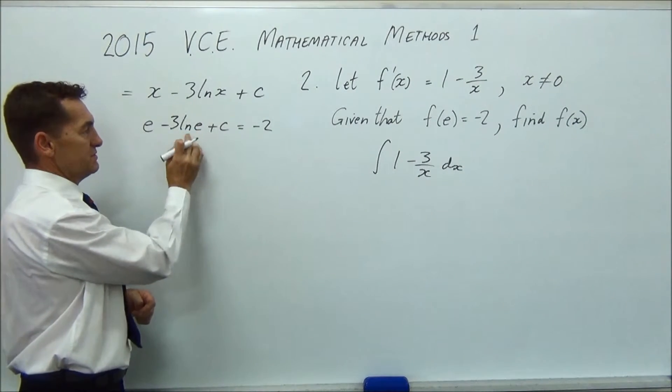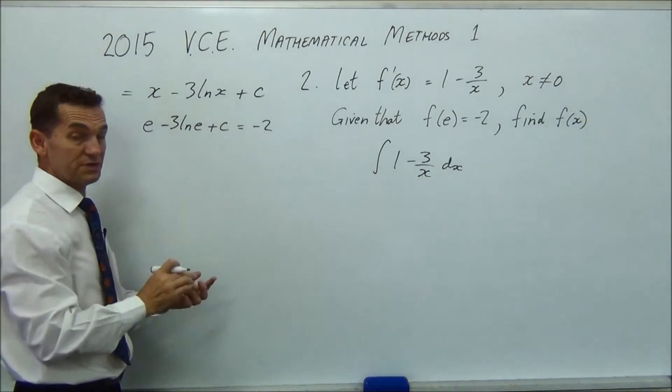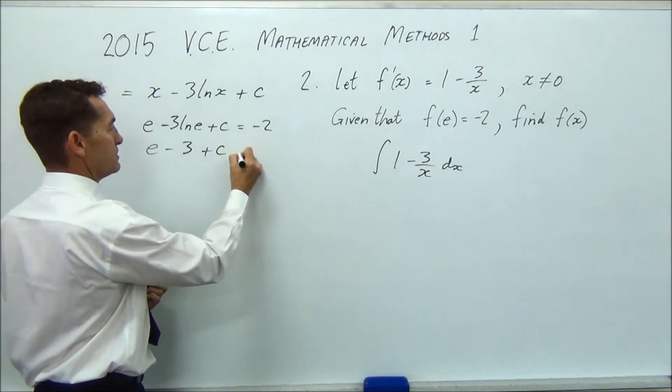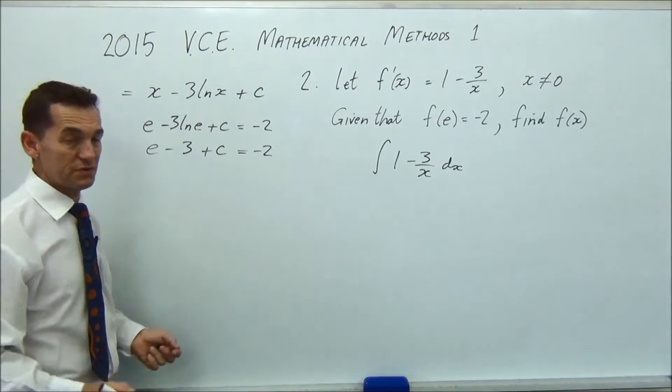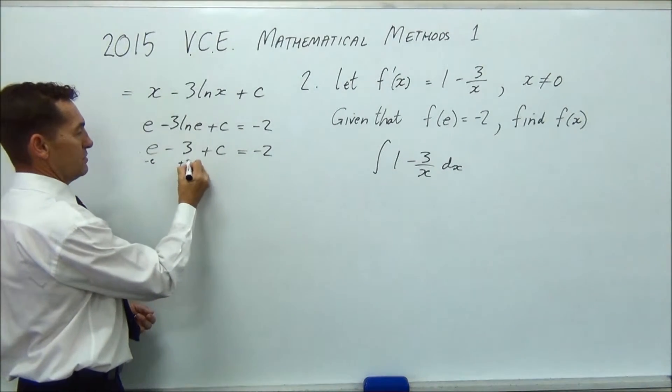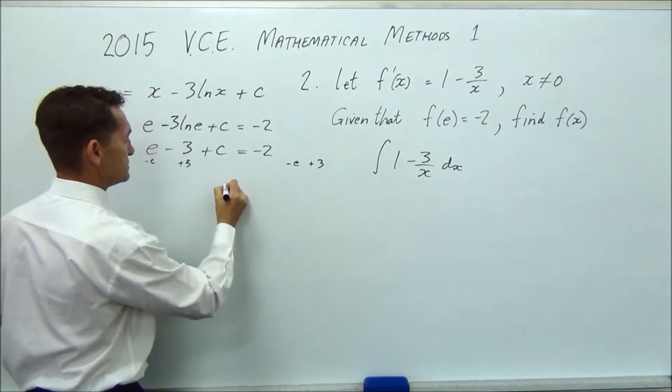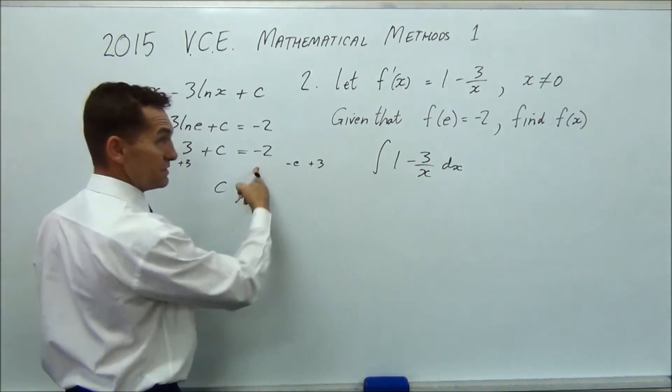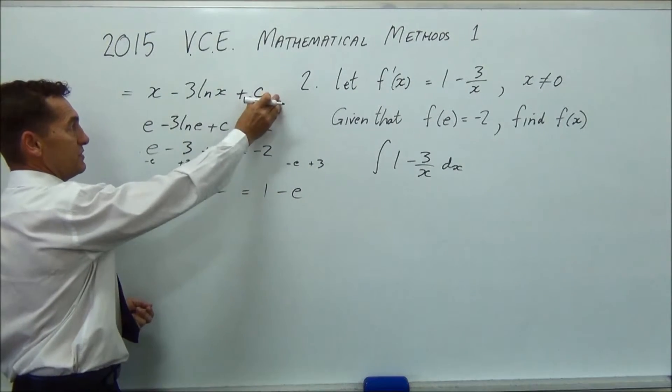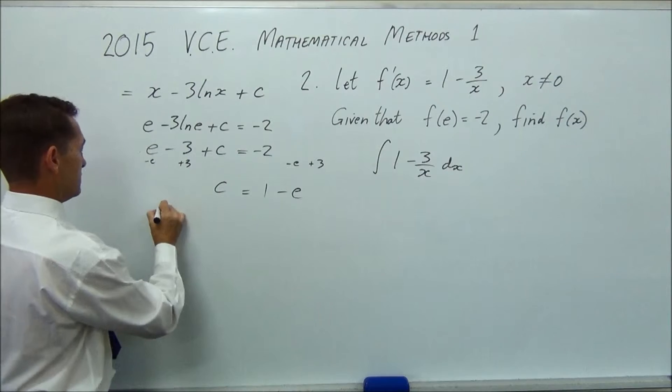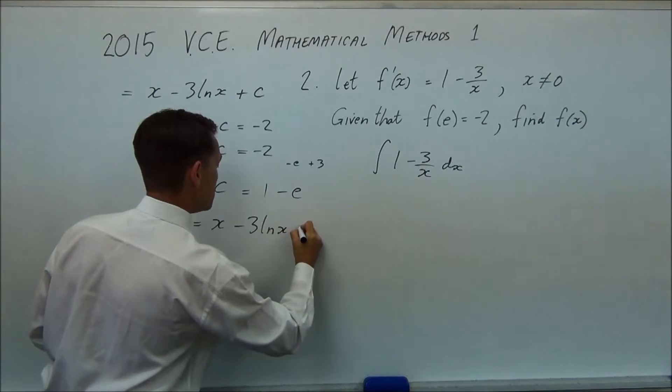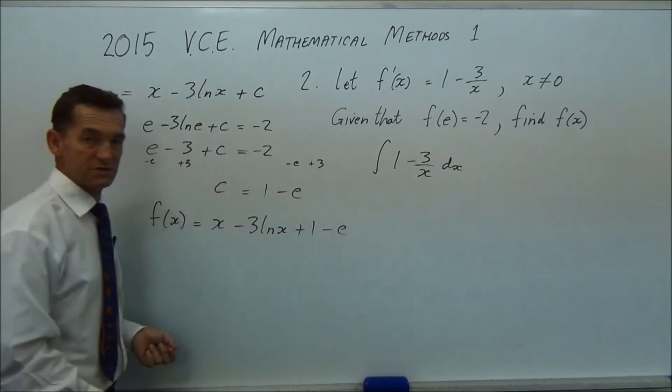log e, ln e. So this is really log base e to the e. And you should know that. You can press it on your calculator. That's just 1. So this is really e minus 3 plus c equals minus 2. Which makes it a very easy equation. You can just move those two both over to there at the same time. So subtract e plus 3. So c equals minus 2 plus 3. What's minus 2 plus 3? 1. So you're going to get 1 minus e. So that value is your c and that will go there. And that is the answer to your question. So find f(x). So f(x) equals x minus 3 log x plus 1 minus e. And you're done.